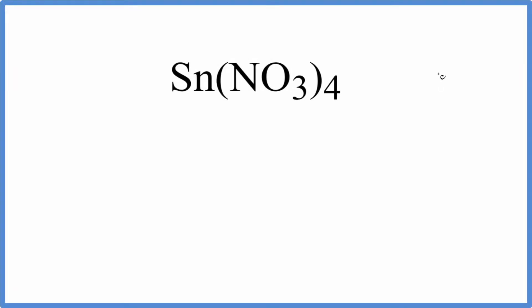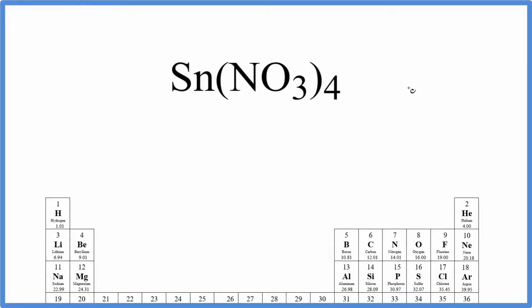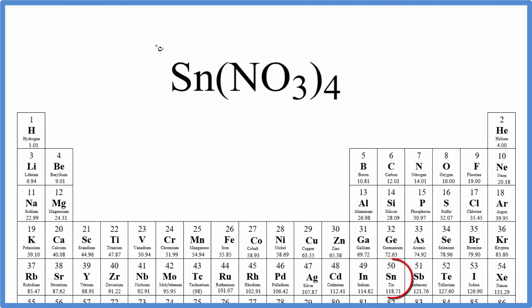To find the molecular weight or molar mass for tin(IV) nitrate, we'll go to the periodic table. Tin is 118.71 grams per mole.